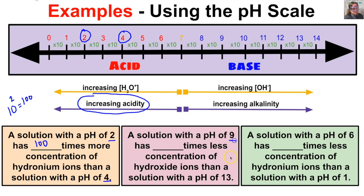Comparing a pH of 9 to a pH of 13: counting the steps, it is four steps away, so 10⁴ = 10,000. A solution with a pH of 9 has 10,000 times less the concentration of hydroxide ions than a solution with a pH of 13.